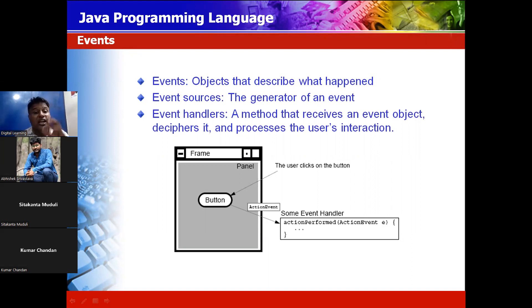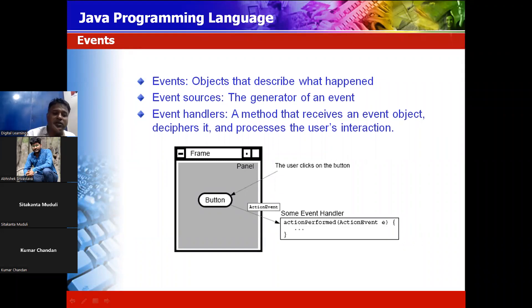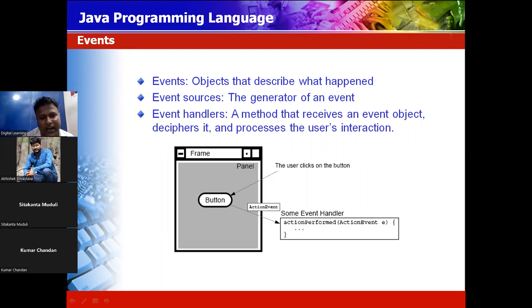The event source is the generator of the event — where your event is generated. For example, a button is an event source. The event handler is a method that receives the event object, interprets it, and processes the user interaction. It contains a method that performs the next operation.